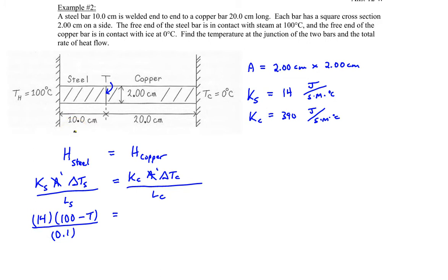That's 10 centimeters divided by 100 to get 0.1 meters. And then we have the thermal conductivity for copper, which is 390. And then the change in temperature is hot temperature is T in this case, and then the cold temperature is zero, so T minus zero divided by the length of the bar, which is 0.2 meters. You can see that 0.1 will go into 0.2 two times. And simplifying, we have 2 times 14 times 100 minus T. And on the right side, we have 390 times T. And then 2800 minus 28T equals 390T.